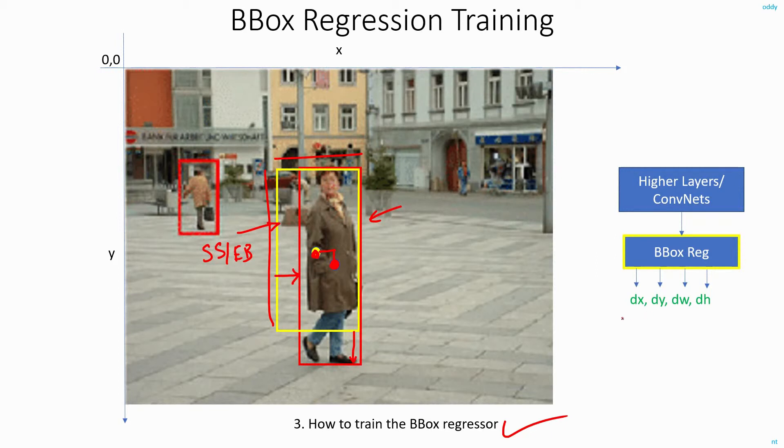So ultimately what this bounding box regressor has to output here in this case is dw, that is the small change in width, dh small change in height, and dx small change in the midpoint of the box in the x direction, and dy will be small change in the midpoint of the box in the y direction. So if it gives me these four values from the existing bounding box proposal from the yellow box, I can calculate the dimension and location of the red box, the actual box here.